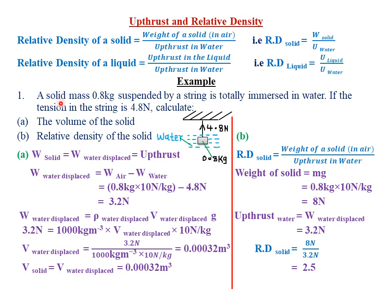Let's look at an example involving calculation of relative density in a solid. Our first example reads that a solid of mass 0.8 kg suspended by a string is totally immersed in water. If the tension in the string is 4.8 Newtons, calculate part A the volume of that particular solid. We have a sketch showing the solid of mass 0.8 kg suspended on a string, totally immersed in water, with a tension of 4.8 Newtons. Part A asks us to find the volume of the solid.